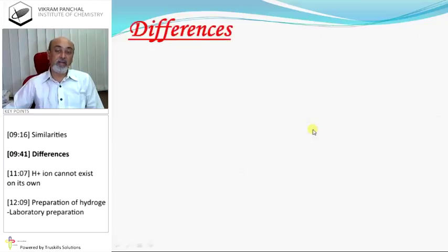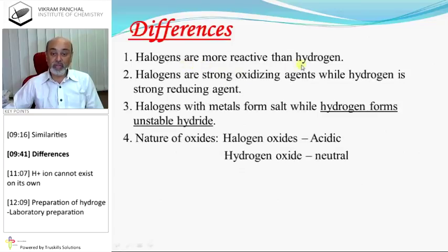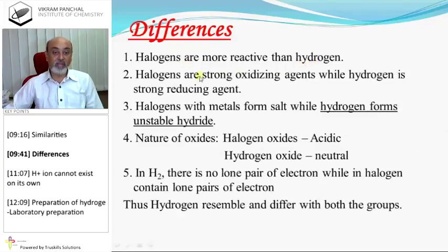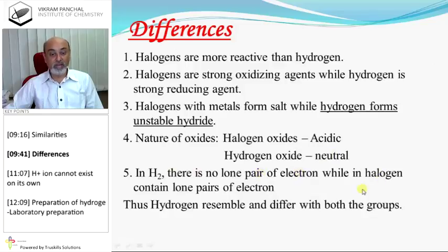Differences: hydrogen is also different from halogens. Halogens are more reactive than hydrogen. Halogens are strong oxidizing agents, while hydrogen is a strong reducing agent. Halogens with metals form stable salts, while hydrogen forms unstable hydrides. Halogen oxides are acidic while hydrogen oxide is neutral. Hydrogen has no lone pair of electrons, while halogens contain lone pairs of electrons.